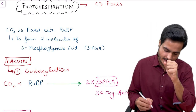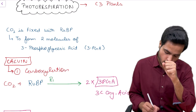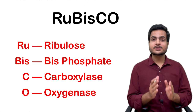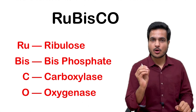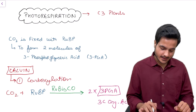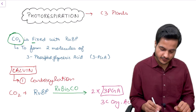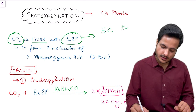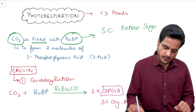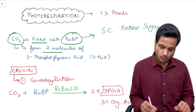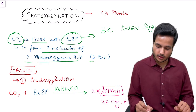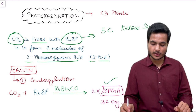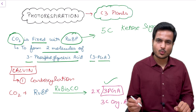This whole carboxylation reaction — the first reaction of the Calvin cycle — is catalyzed by an enzyme called RuBisCO, whose full form is ribulose bisphosphate carboxylase oxygenase. CO2 is fixed with RuBP, a 5-carbon keto sugar, leading to the formation of two molecules of 3-phosphoglyceric acid, also called 3-PGA. This is the primary carbon dioxide fixation product of C3 plants.